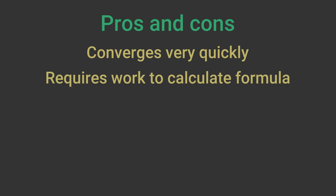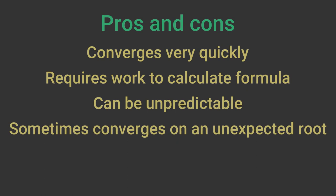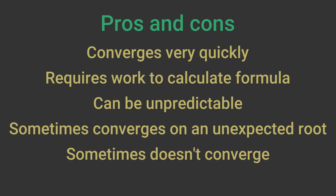There are some disadvantages though. The first is that we need to calculate the derivative of the function to derive the recurrence formula. The second disadvantage is that the method can sometimes be unpredictable. If an equation has more than one solution, a particular starting point might converge on an unexpected root. In some cases it might not converge at all. However, these problems can usually be fixed fairly easily by selecting a different initial value.